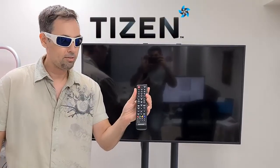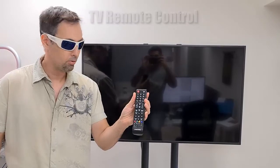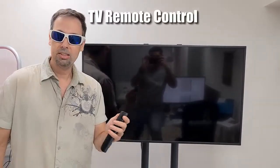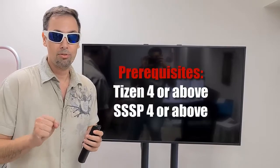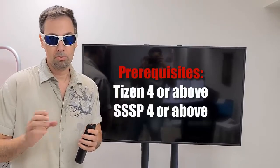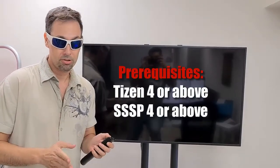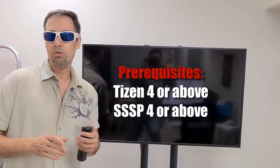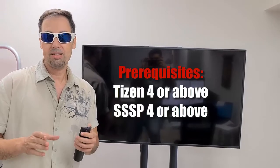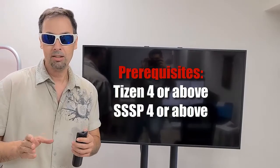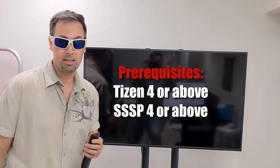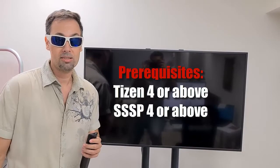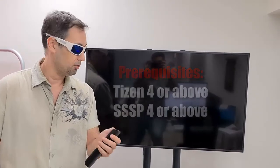So first, I have this remote control, and this is a TV. The TV must be with Samsung Tizen 4 or above — that's the version of the OS — and it needs to have SSSP, also 4 or above. SSSP is the digital signage firmware.